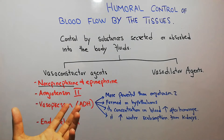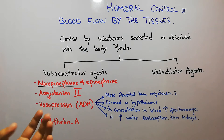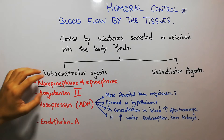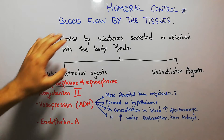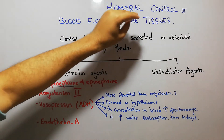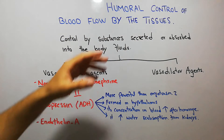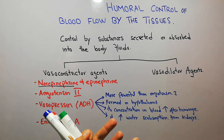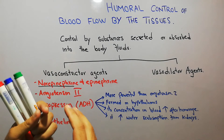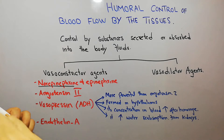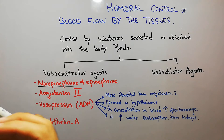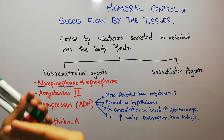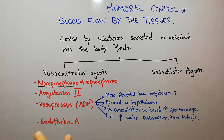Vasopressin or antidiuretic hormone, ADH, has many functions, but today we are going to specifically discuss its functions regarding blood flow — the humoral control of blood flow by the tissues — how the tissues' requirements increase or decrease the concentration of ADH, and how ADH then increases or decreases the blood flow to the tissues.